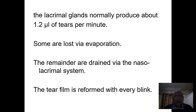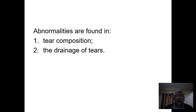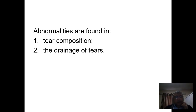The tears produced mainly form the tear film in front of the cornea, and this tear film is reformed with every blink. We are going to discuss two main groups of conditions: first, conditions related to the tear composition, and second, conditions related to drainage of the tears.